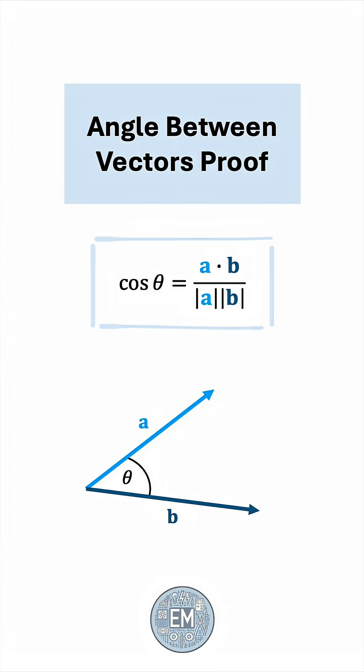This is the famous formula for the angle between two vectors. But where does this come from? Let's prove it.